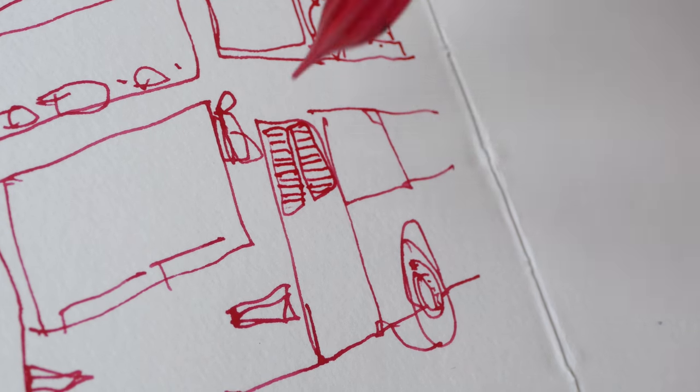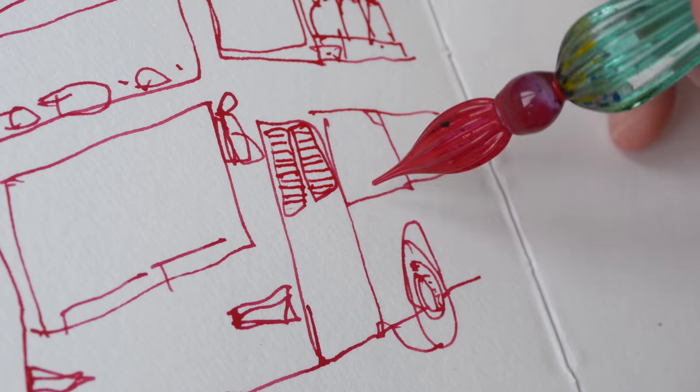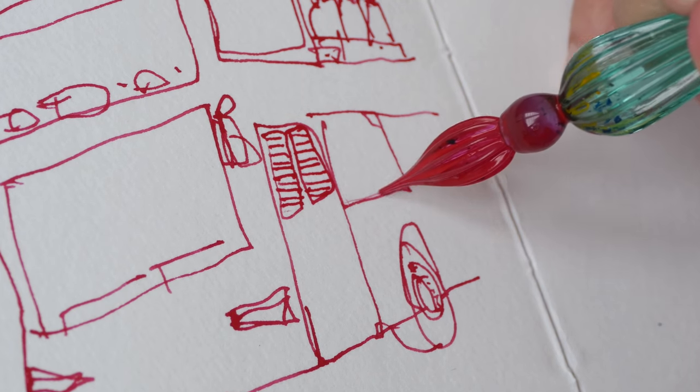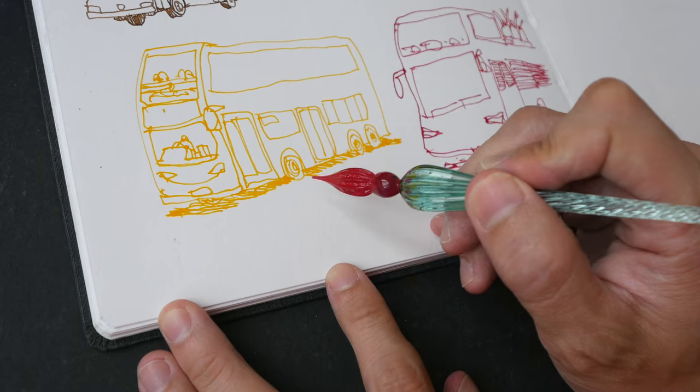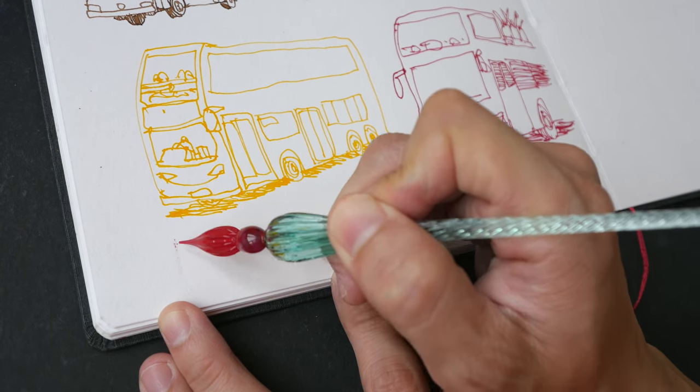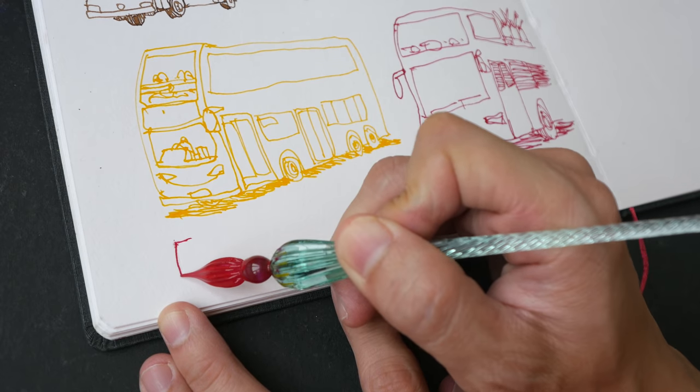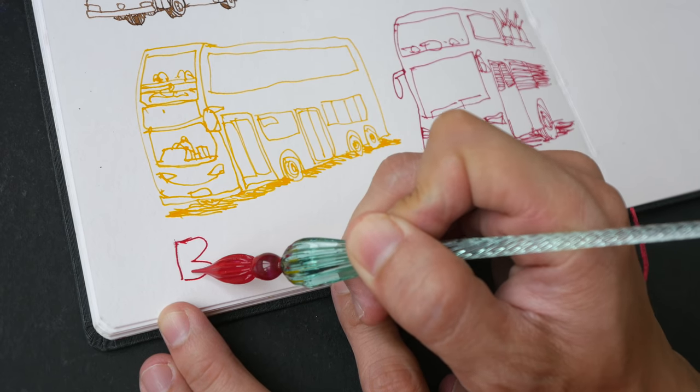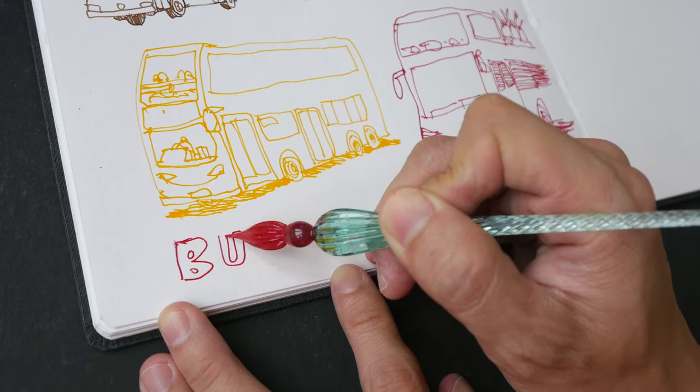So you can actually draw with the pen at an angle like this, or you can draw with the pen almost vertically. And of course, you can use this for writing.